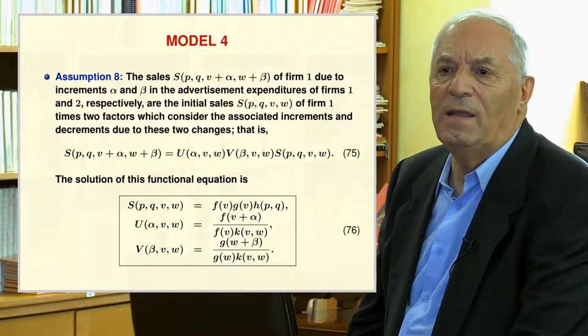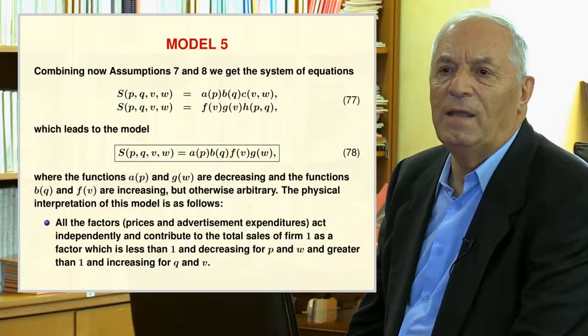Model 4 uses Assumption 8: the sales S of firm 1 due to increments alpha and beta in the advertising expenditures of firms 1 and 2 respectively are the initial sales times two factors considering the associated increments and decrements, that is, functional equation 75 holds. Its solution is given in expression 76. Model 5 combines Assumptions 7 and 8, giving the system of equations 77, which leads to Model 78, where functions A and G are decreasing and functions B and F are increasing but otherwise arbitrary. All factors — prices and advertising expenditures — act independently: P and W contribute as factors less than 1 and decreasing, while Q and V contribute as factors greater than 1 and increasing.